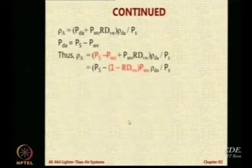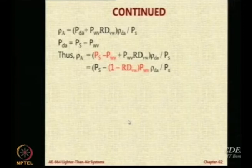You can replace for that P_DA there. So rho_A will become P_S minus P_WV plus P_WV RD_VW rho_A by P_S. And now there is one more term which is common, that is P_WV pressure of water vapor is also common term in the two. So you take it out and simplify the expression.